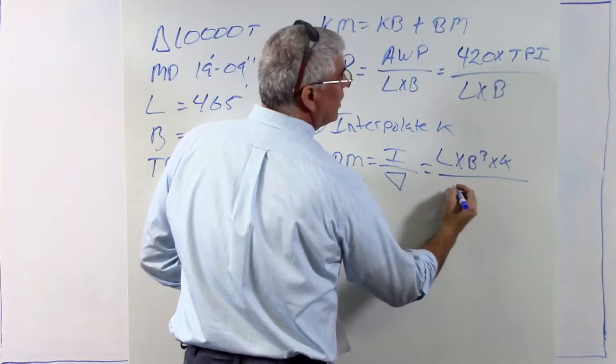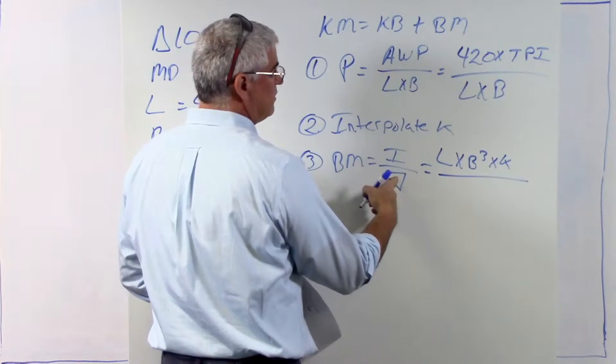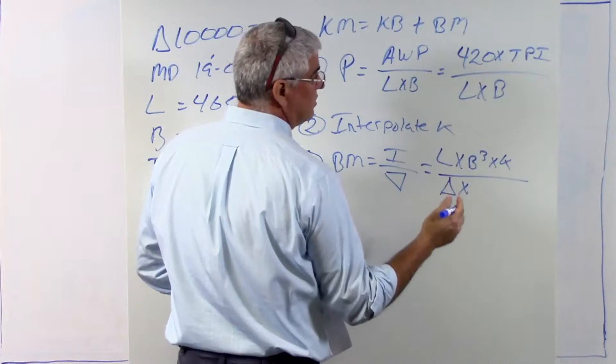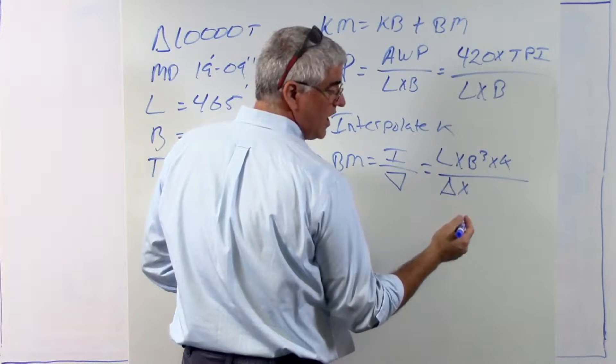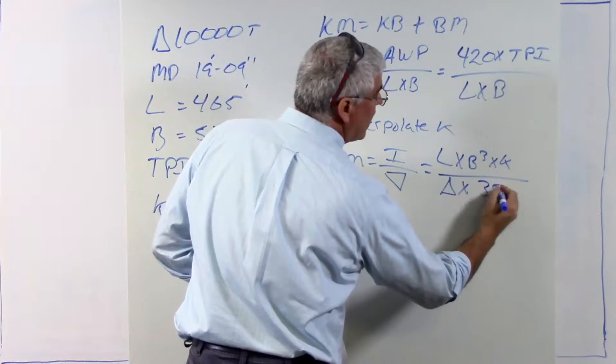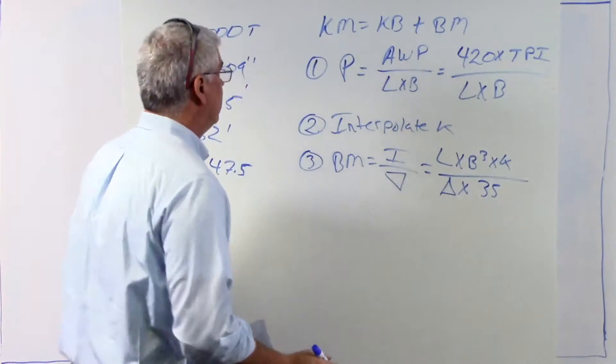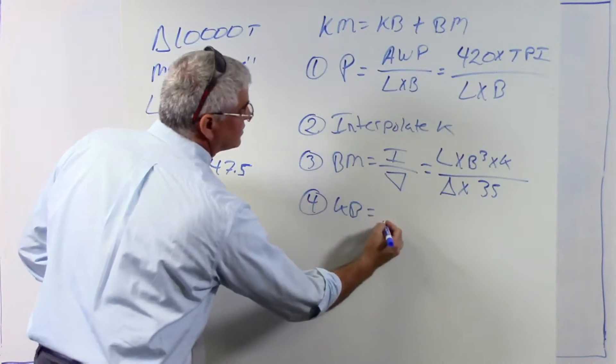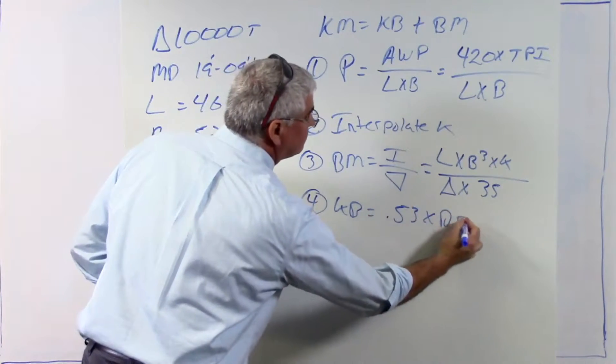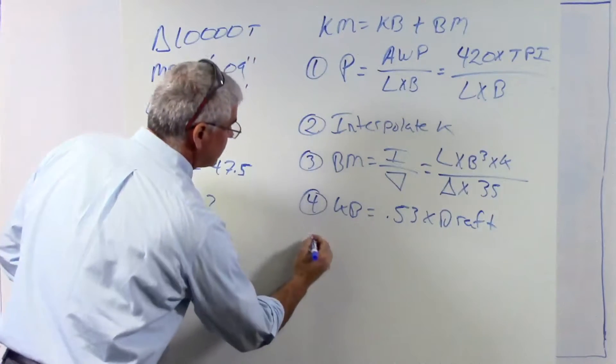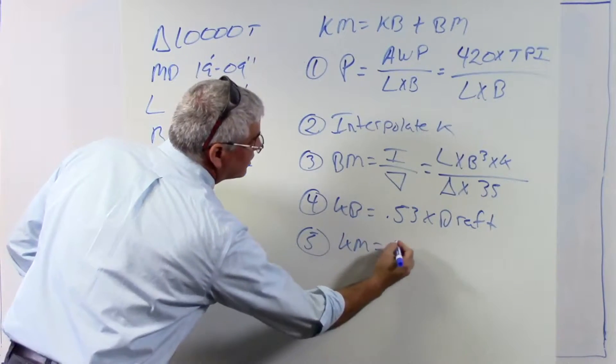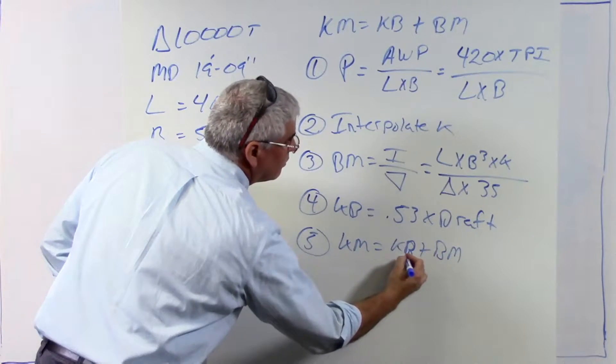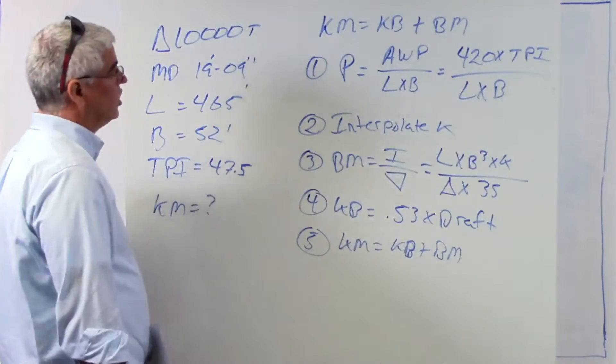And that is the volume of displacement is really the displacement. In this case, let's say the vessel's in salt water, 1.025 specific gravity. It's going to be 35 feet cubed per ton. So once I've done that, now I also then need to calculate kb. And for a merchant vessel, that's pretty simple. It's 0.53 times the draft. And then the last step is going to be to calculate km itself. And that's going to be kb plus bm.